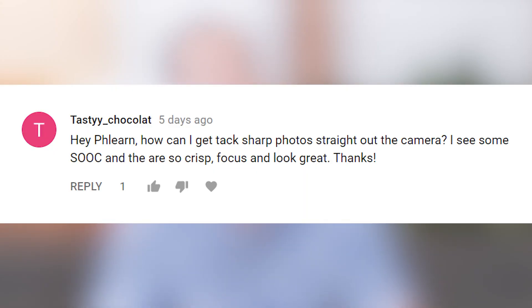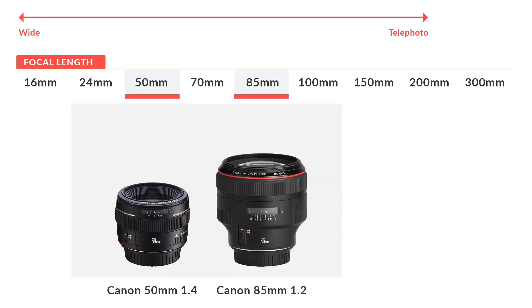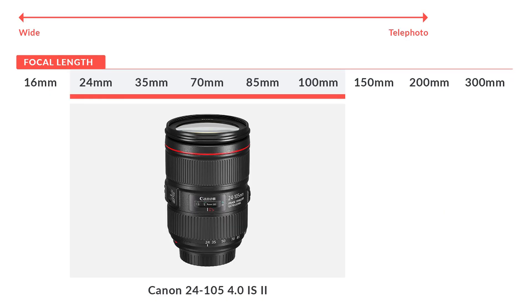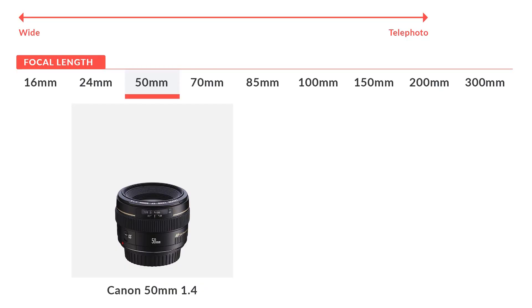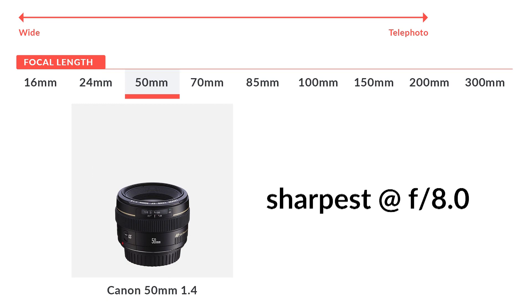How can I get tack sharp photos straight out of the camera? There are a few things that influence how sharp a photo is going to be, and most of those have to do with the lens. In general, a prime lens — which is a fixed focal length, like a 50mm f1.4 or an 85mm f1.4 — is going to be sharper than a zoom lens like a 24-105 or a 16-35. Each lens also has a maximum sharpness — for instance, a 50mm f1.4 is going to be sharper at f8 than at f1.4. You can look online to find the maximum sharpness for different lenses, or you can do your own tests.